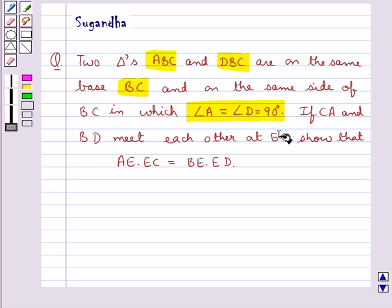If CA and BD meet each other at E, show that AE into EC is equal to BE into ED.